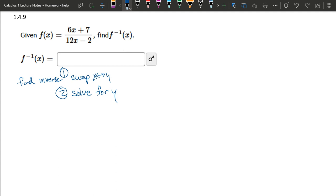Alright, so first step, swap x and y. Well, there is no y on the page. So how do we have y? Well, y is always equal to f(x).